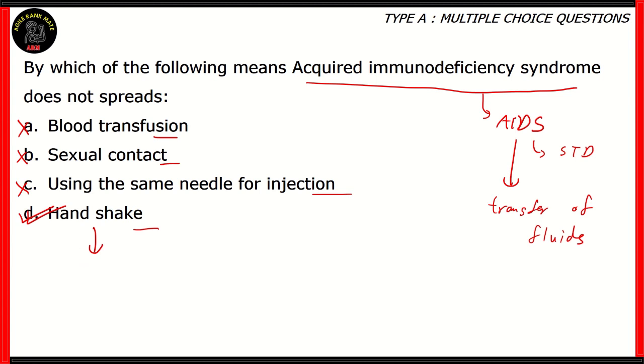AIDS does not travel via air or via droplets. So that means having a handshake with someone who is supposedly having AIDS does not mean that you get to have it. So option D, handshake, is the right answer.